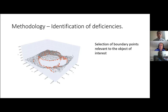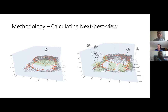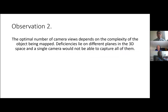We don't want boundary points at the edges of the model, so we remove those and keep only the relevant parts of the object of interest — these are where we want to take new pictures and gather information to refine our model. However, there's a problem: we can't capture all deficiency points with a single picture because they belong to different planes in three-dimensional space. Taking one picture of all deficiencies would not be the best strategy, so we need a way to decide which planes to cover to capture most deficiencies. This led to the observation that there must be an optimal number of camera positions to map all the deficiencies.